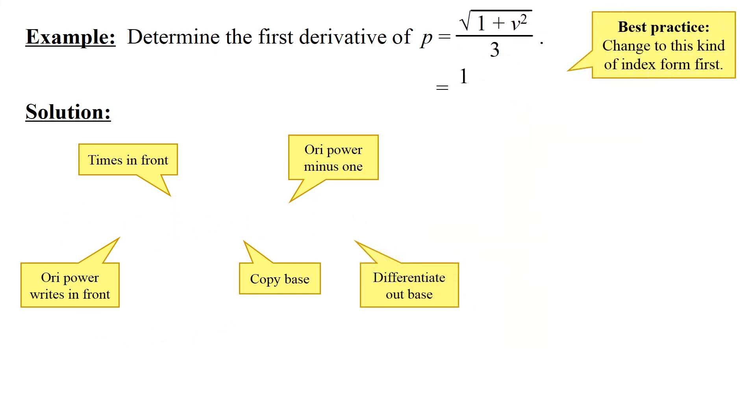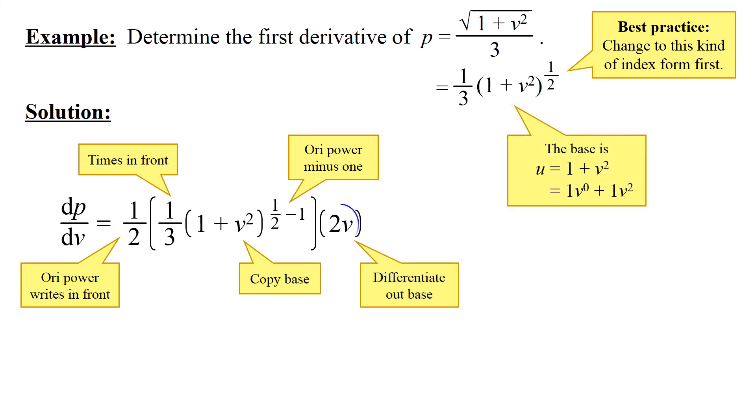Even from root form, for the best practice, change to the index form first. Here we go. Ori power writes in front, times in front, copy base. Ori power minus one, differentiate out base. Since the base is y plus v squared, therefore, differentiating out the base with respect to v yields 2v.